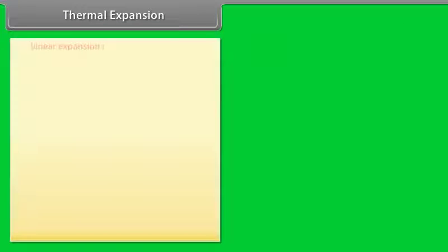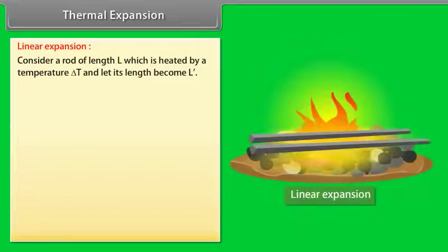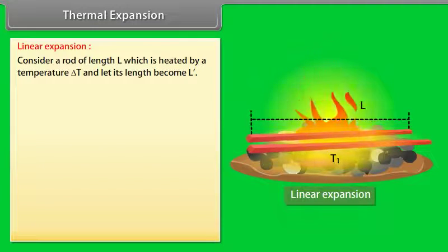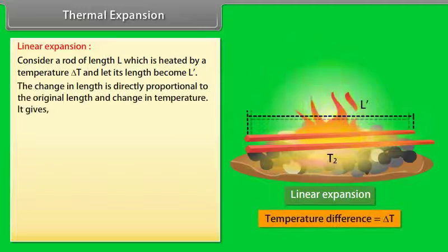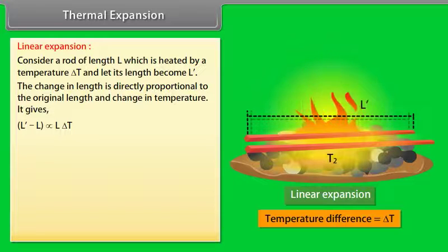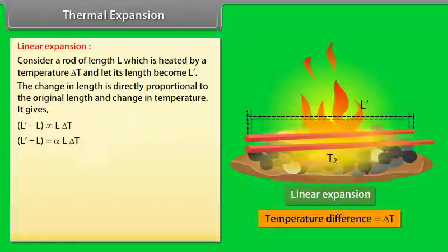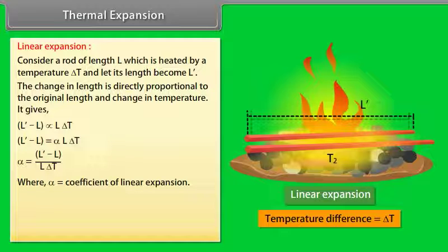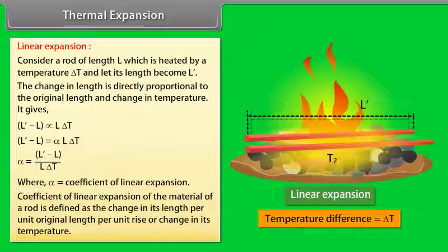Linear expansion: Consider a rod of length L heated by a temperature ΔT, and let its new length be L'. The change in length is directly proportional to the original length and the change in temperature, giving L' − L = αLΔT. The coefficient of linear expansion α = (L' − L)/(LΔT). It is defined as the change in length per unit original length per unit rise in temperature.